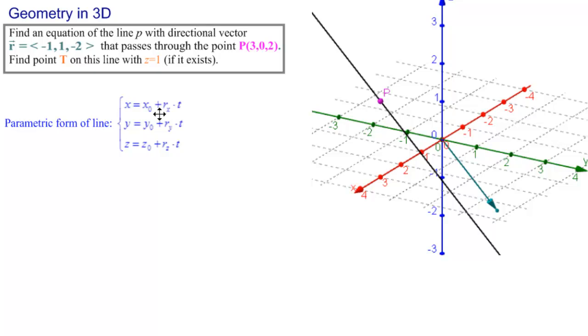where x0, y0, and z0 come from the point P, and rx, ry, rz come from the directional vector.